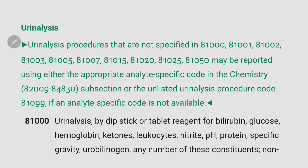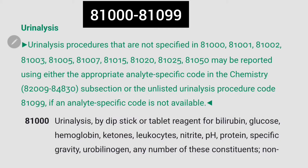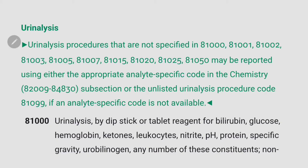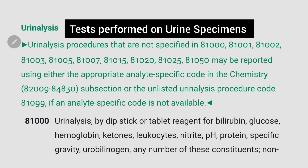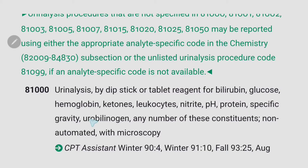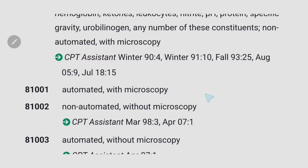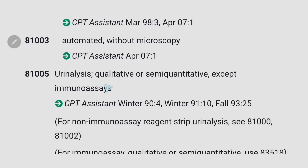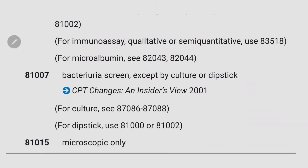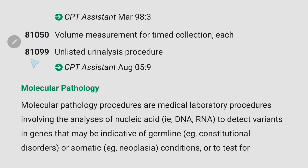In this video we'll start with urinalysis. The code range is 81000 to 81099. In this section, urinalysis includes both simple and complex tests and analysis, and all tests are performed on a urine specimen. Code 81000 is for urinalysis by dipstick or tablet reagent for bilirubin, glucose, etc. — any number of constituents, non-automated with microscopy. We also have codes for automated with microscopy, non-automated without microscopy, qualitative or semi-quantitative urinalysis, urine pregnancy test, and 81099 for unlisted urinalysis procedure.